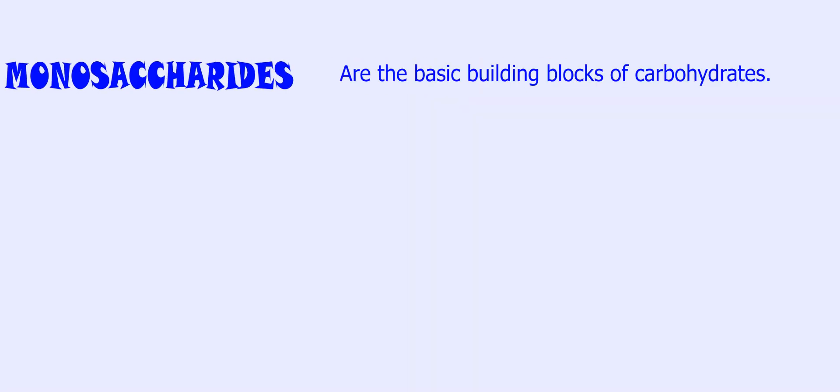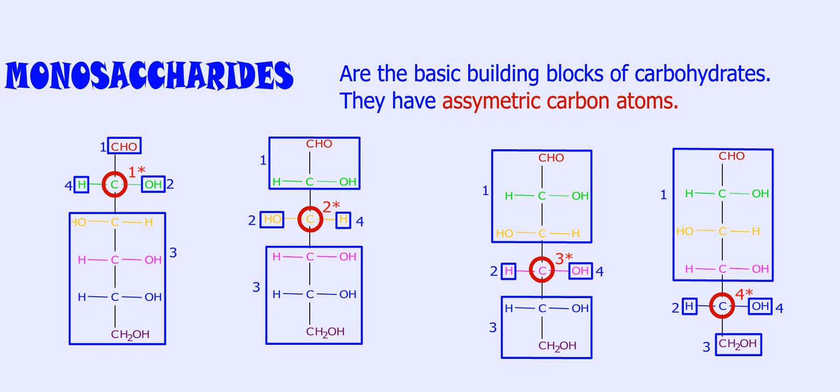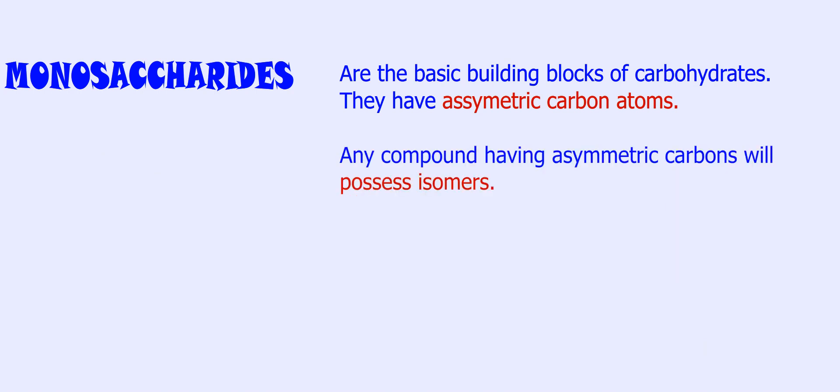Monosaccharides are the basic building blocks of carbohydrates. They have asymmetric carbon atoms in their structure. An asymmetric carbon atom is a carbon atom attached to four different atoms or groups, which enables them to form isomers. Any compound having asymmetric carbons will possess isomers.